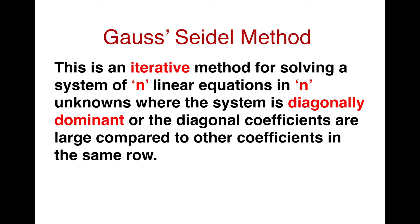Today I will explain the Gauss-Seidel method for solving a system of n linear equations in n unknowns. Gauss-Seidel method is an iterative method. In all iterative methods, we make a guess for the unknown and in successive steps we improve the accuracy of this initial guess, jumping towards the exact solution in each step. After a finite number of steps, we will reach the exact solution.